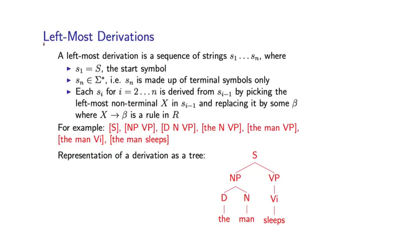The next crucial concept is going to be the idea of a derivation, or more specifically, what's called a leftmost derivation. So a derivation is a sequence of strings, S1 through SN, where this sequence of strings has the following property. So S1 has to be equal to S, this distinguished start symbol in the grammar.